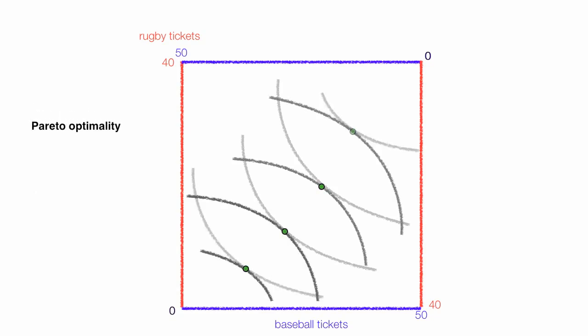All these green dots represent a Pareto optimality and the contract line is also considered a Pareto optimality. And this is called efficient exchange.